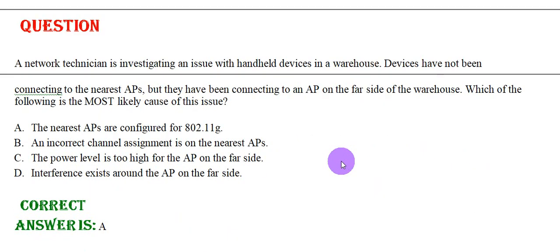A network technician is investigating an issue with handheld devices in a warehouse. Devices have not been connecting to the nearest APs, but they have been connecting to an AP on the far side of the warehouse. Which of the following is the most likely cause of the issue? Option A: The nearest APs are configured for 802.11g. Option B: An incorrect channel assignment is on the nearest APs. Option C: The power level is too high for the AP on the far side. Option D: Interference exists around the AP on the far side. The correct answer is Option A.